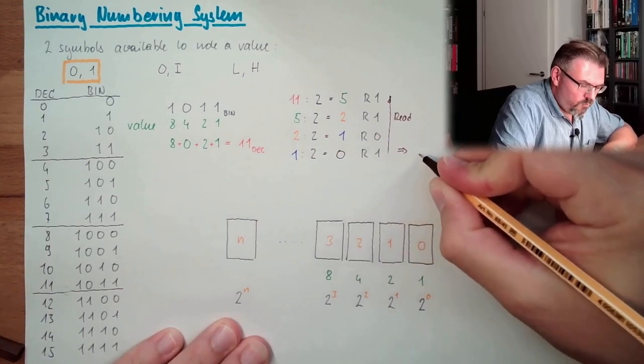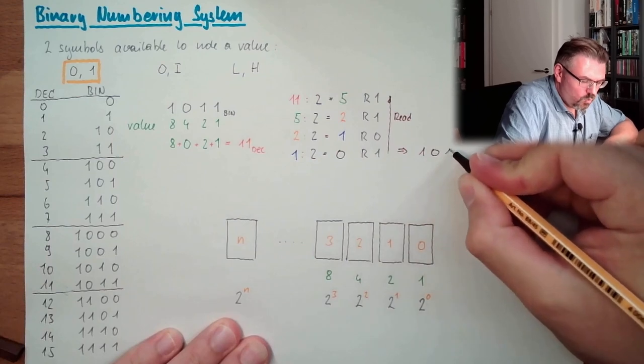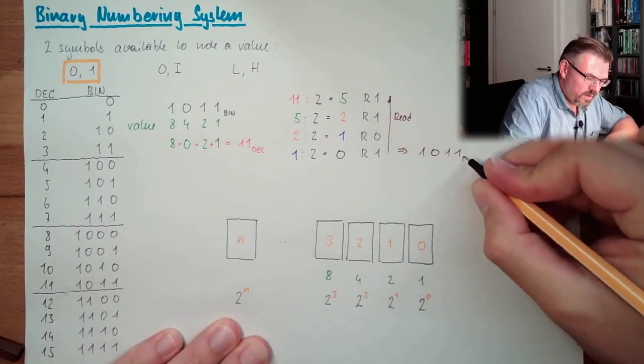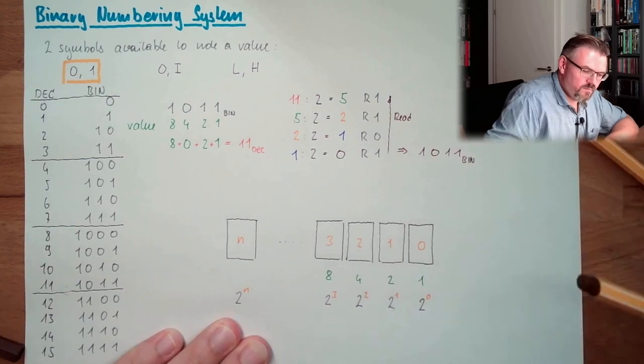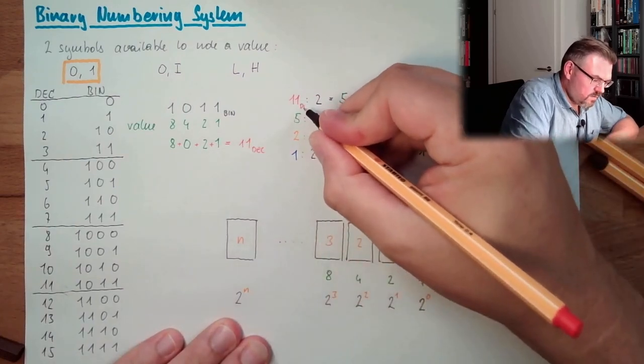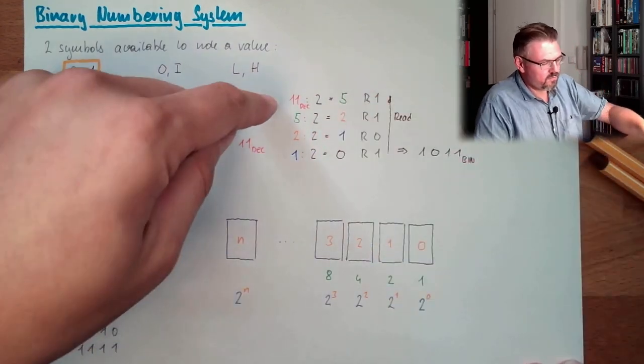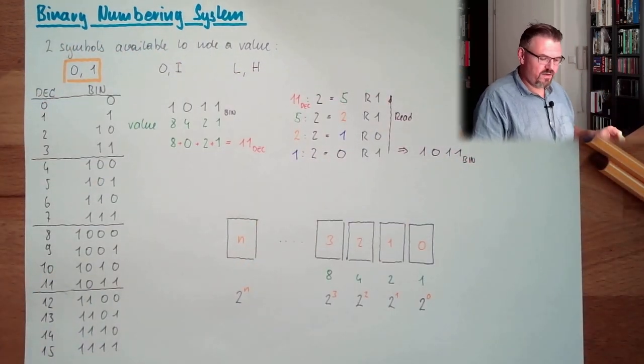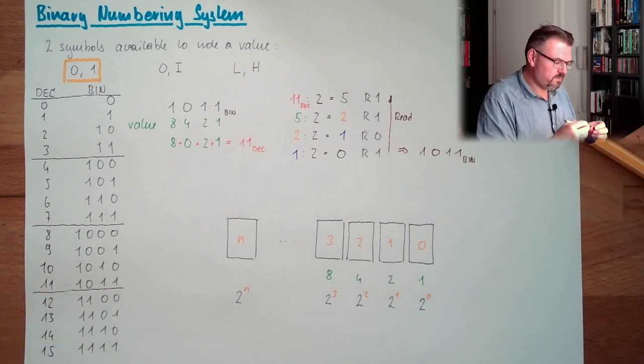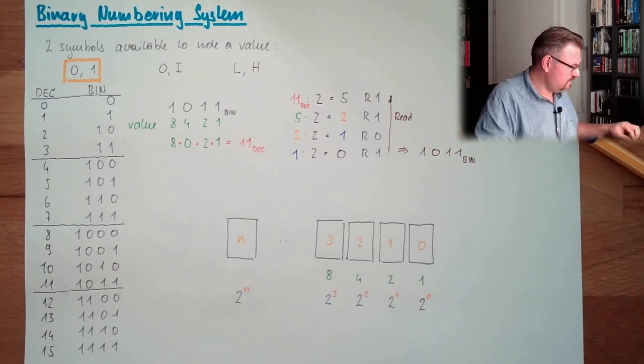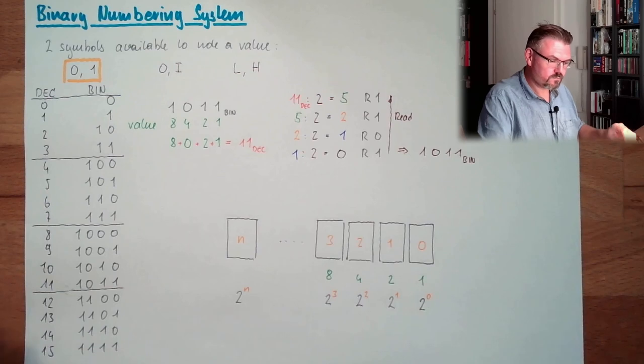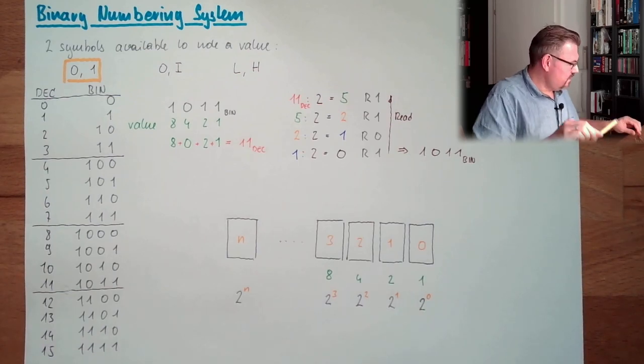So we have 1, 0, 1, 1. 1, 0, 1, 1, binary. This is how you transfer a decimal number to a binary number by hand. Or you have a fancy calculator or Windows operating system and you simply press a button. That's the usual way, but now you know how it's really working.